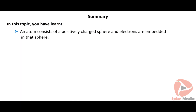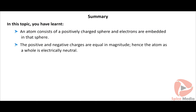Summary: an atom consists of a positively charged sphere with electrons embedded in it. The positive and negative charges are equal in magnitude, hence the atom as a whole is electrically neutral. This is the limitation of Thompson's model.